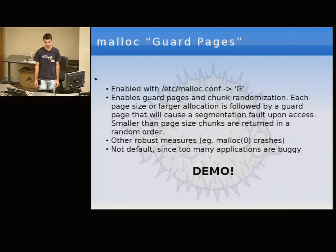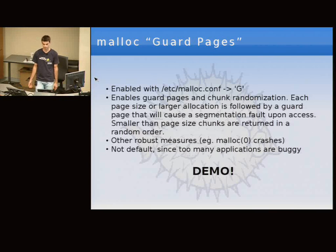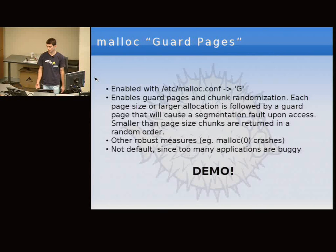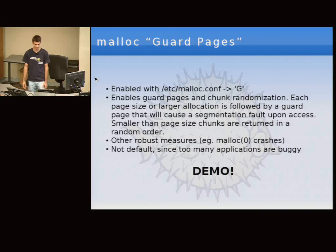We also have guard pages in malloc. If you make an allocation of page size or greater, immediately after the allocated memory we place a guard page. Every access to that guard page causes your program to crash. This catches many bugs where people read or write one byte too far. We also made malloc(0) crash — if we'd had that earlier, it would have prevented the first SSH exploit we experienced. These options are not enabled by default yet because many third-party applications innocently read or write one byte too far, but I like to run with this option to expose interesting bugs.